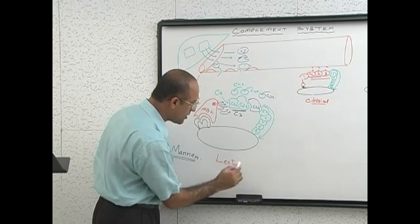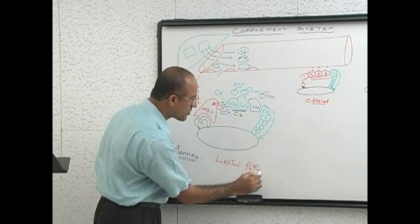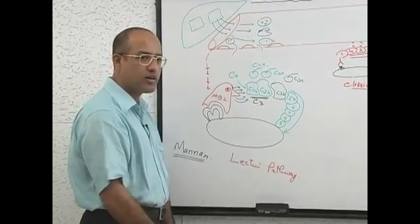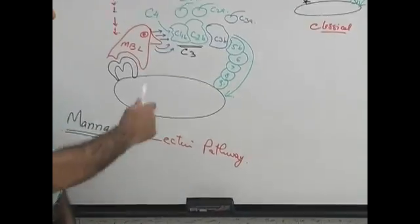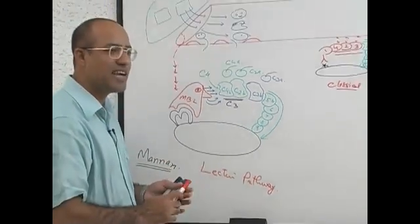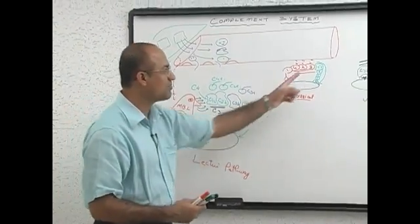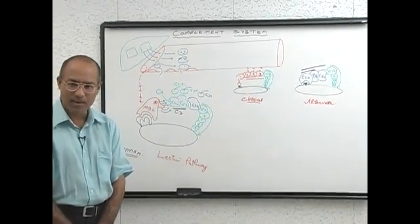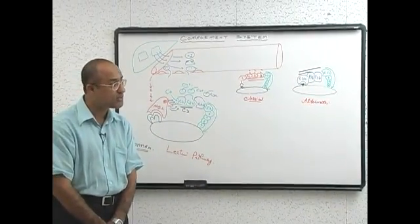Lectin pathway of complement activation. So now you have three pathways. They have something common. What is the common? They have a common final pathway. That all of them produce membrane attack complex. But in early steps they differ from each other.